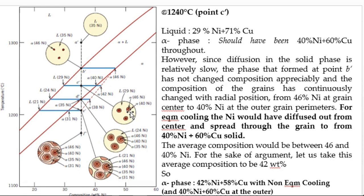The center remains at 46% nickel, but the outer region becomes 40%. As per the phase diagram everything should have been 40% throughout, but it does not happen. Taking an average, approximately 42% nickel is present, so the alpha phase has 42% nickel and 58% copper.